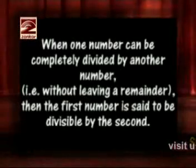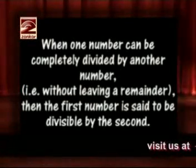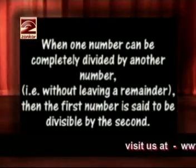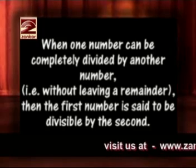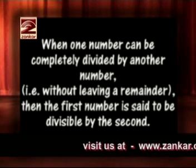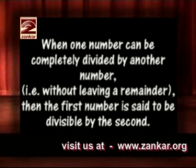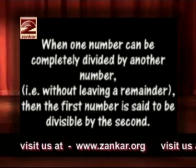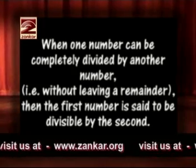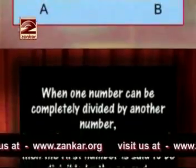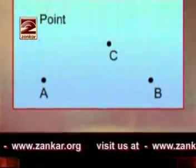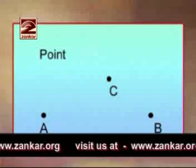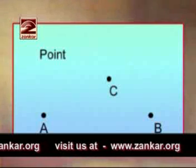When one number can be completely divided by another number, that is, without leaving a remainder, then the first number is said to be divisible by the second.